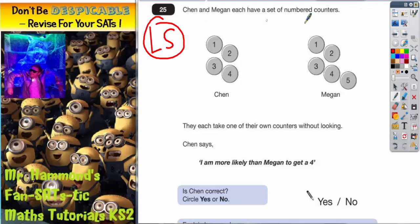It says, Chen and Megan each have a set of numbered counters. So Chen's got 4 counters, Megan's got 5 counters. They each take one of their own counters without looking. Chen says, I am more likely than Megan to get a 4.